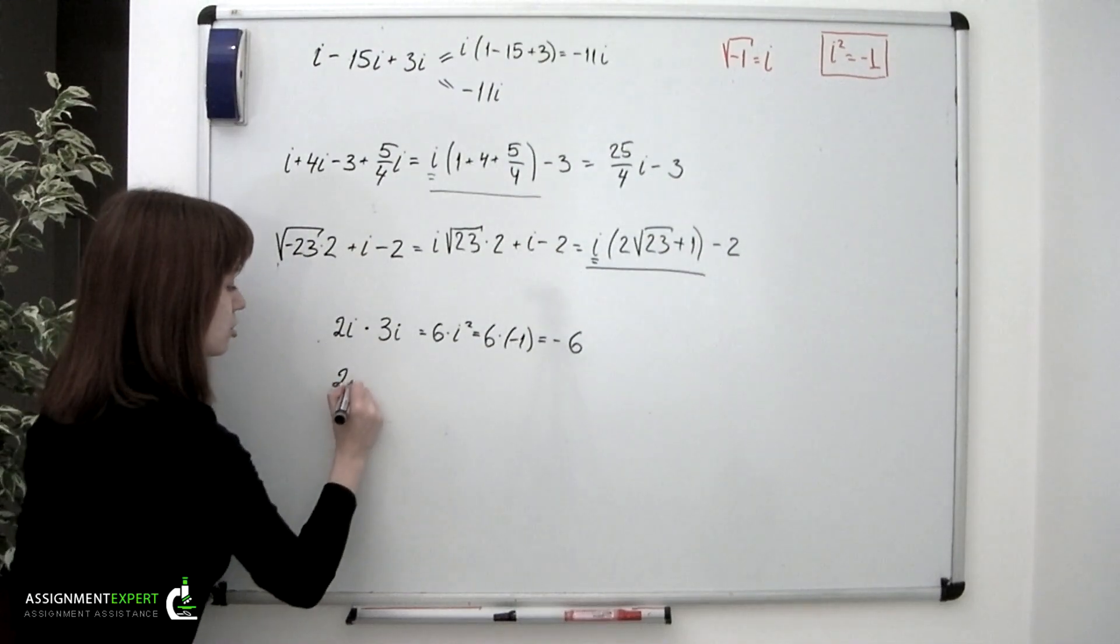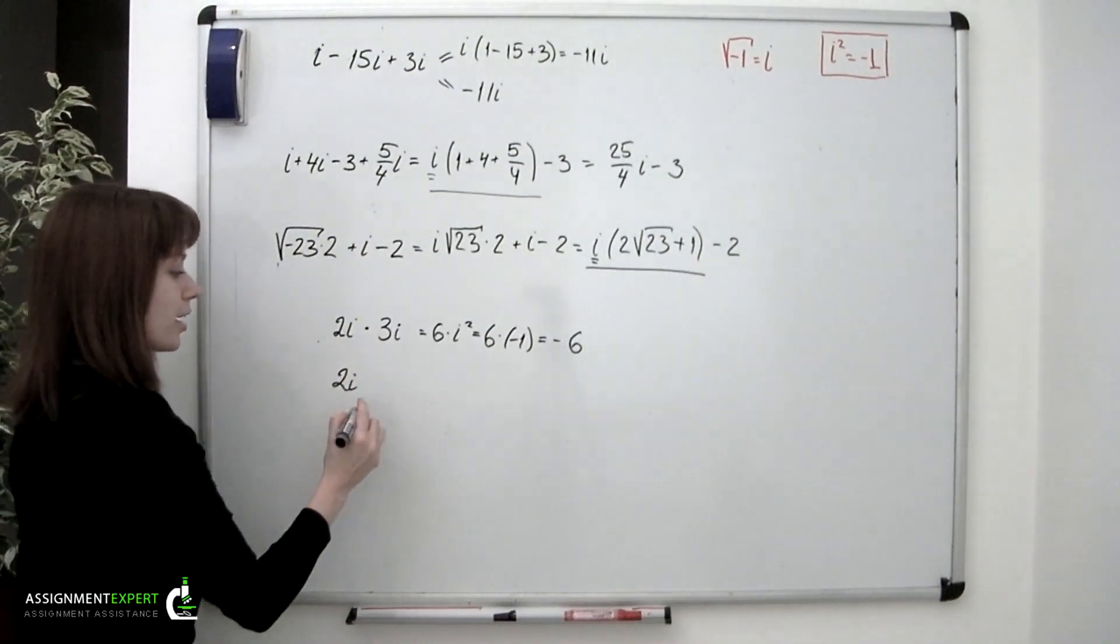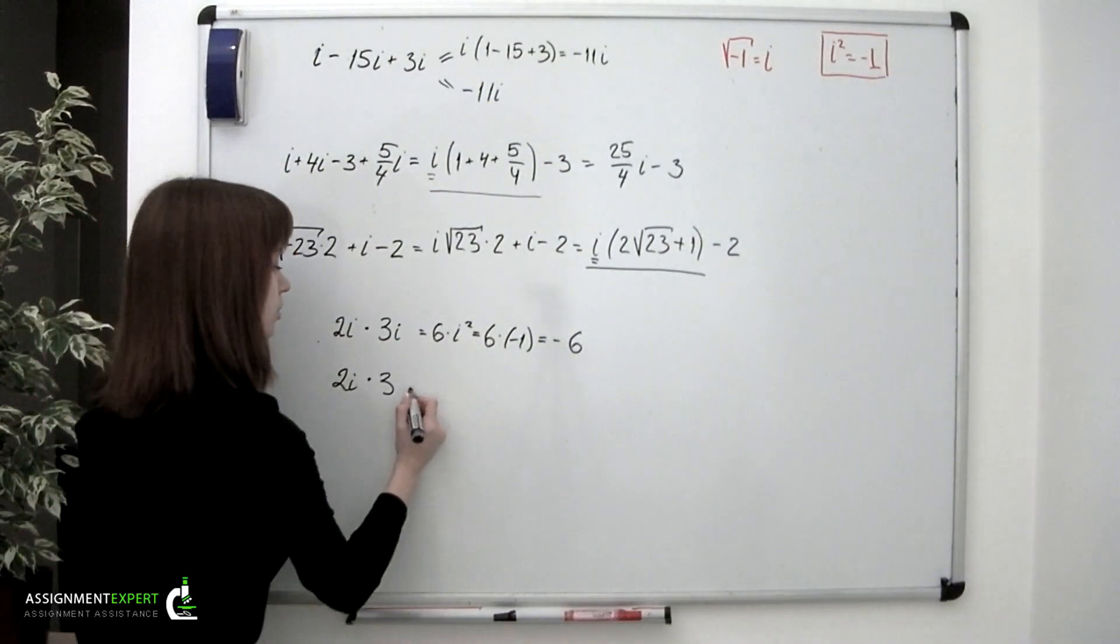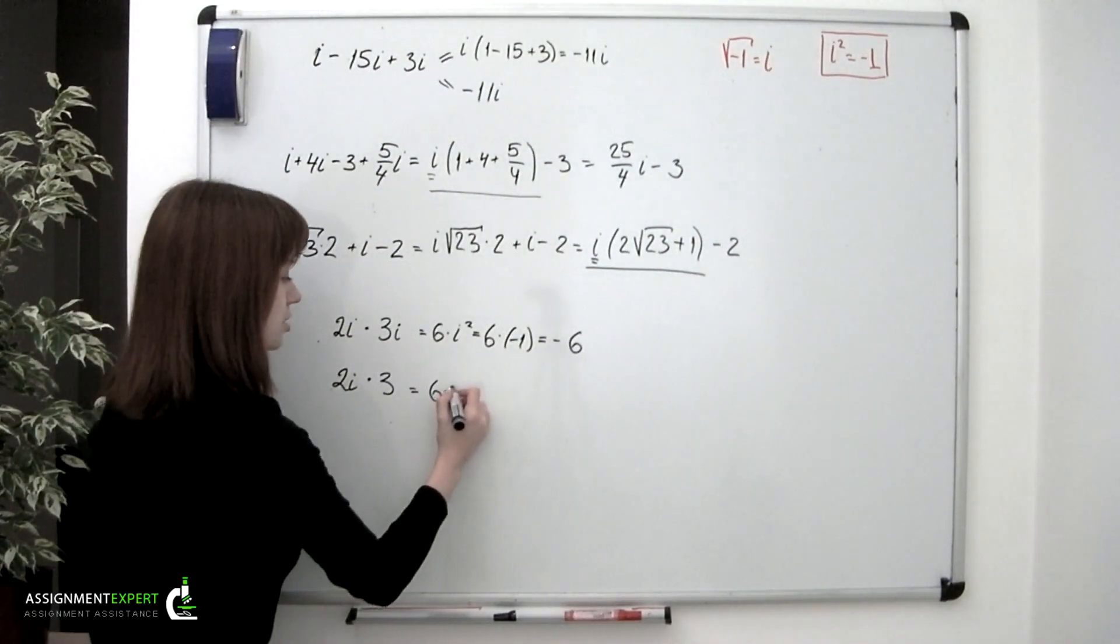But then, if we want to multiply an imaginary number, say 2i, by a real number, say 3, we'll have 6 times i.